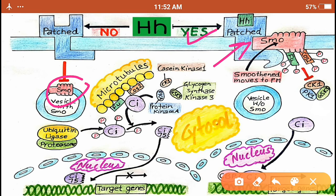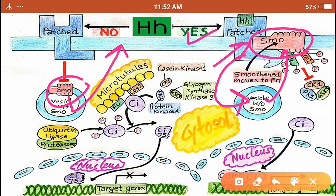So the Smoothened protein moves from the vesicle to the plasma membrane. Here you can see, there is another thing happening: the Patched receptor now with the signaling molecule also moves from the plasma membrane to the vesicle. The effect of this movement of SMO from vesicle to the plasma membrane